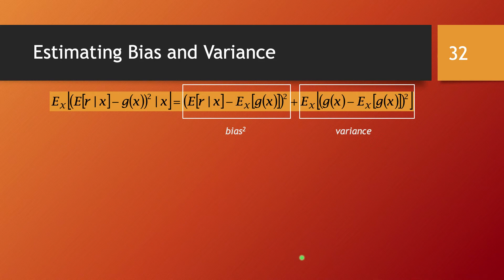As concluded on the previous slide, this error is a combination — it's a sum of the bias squared and the variance.